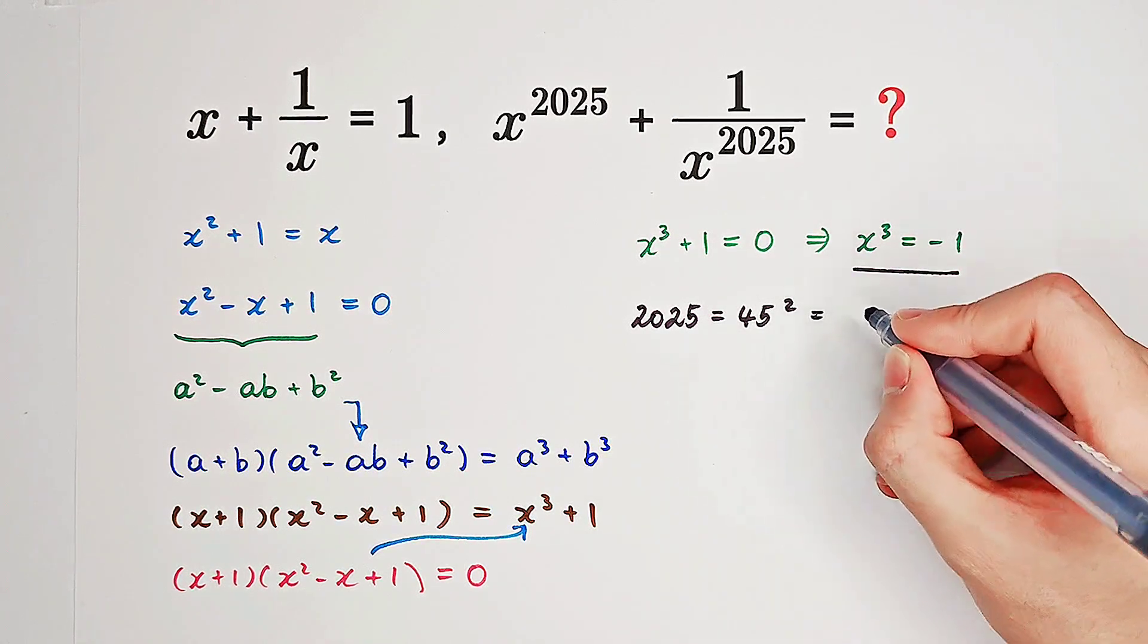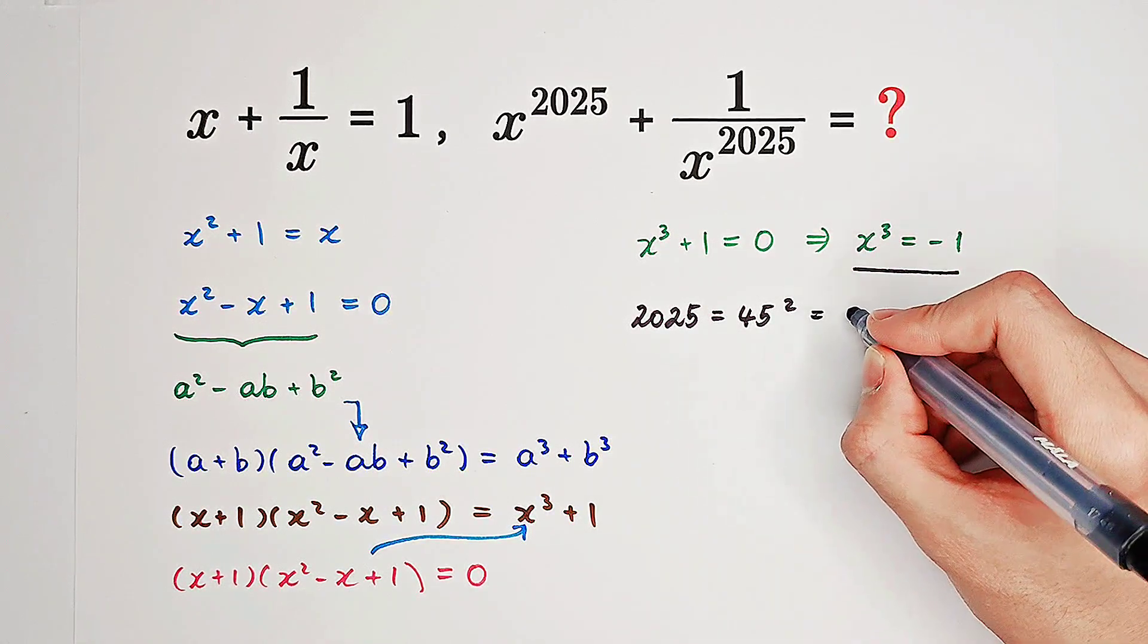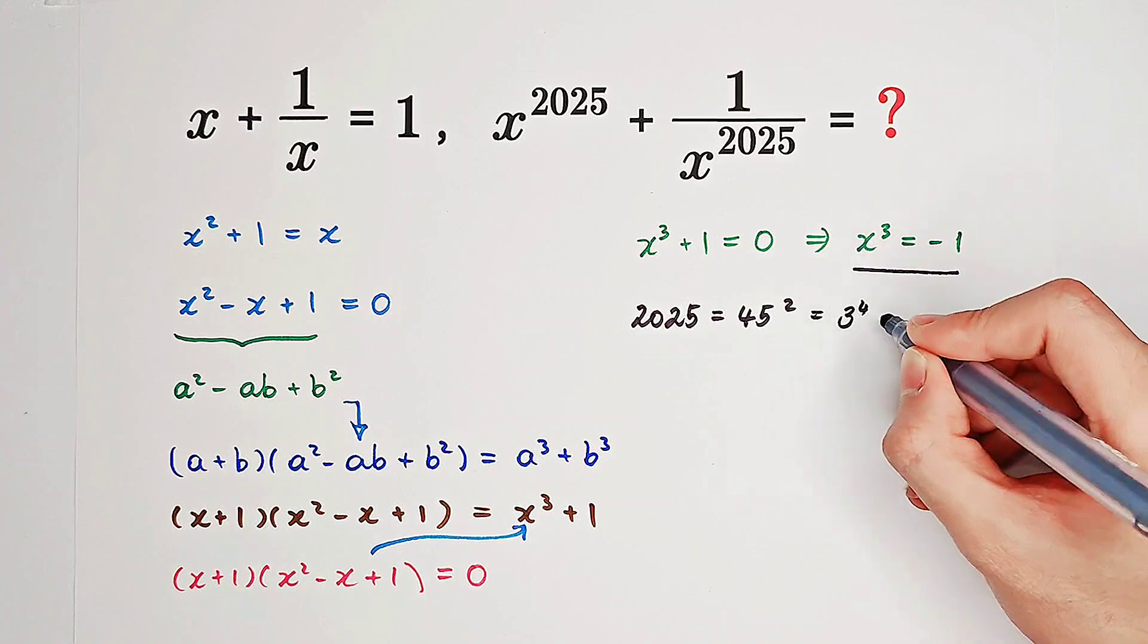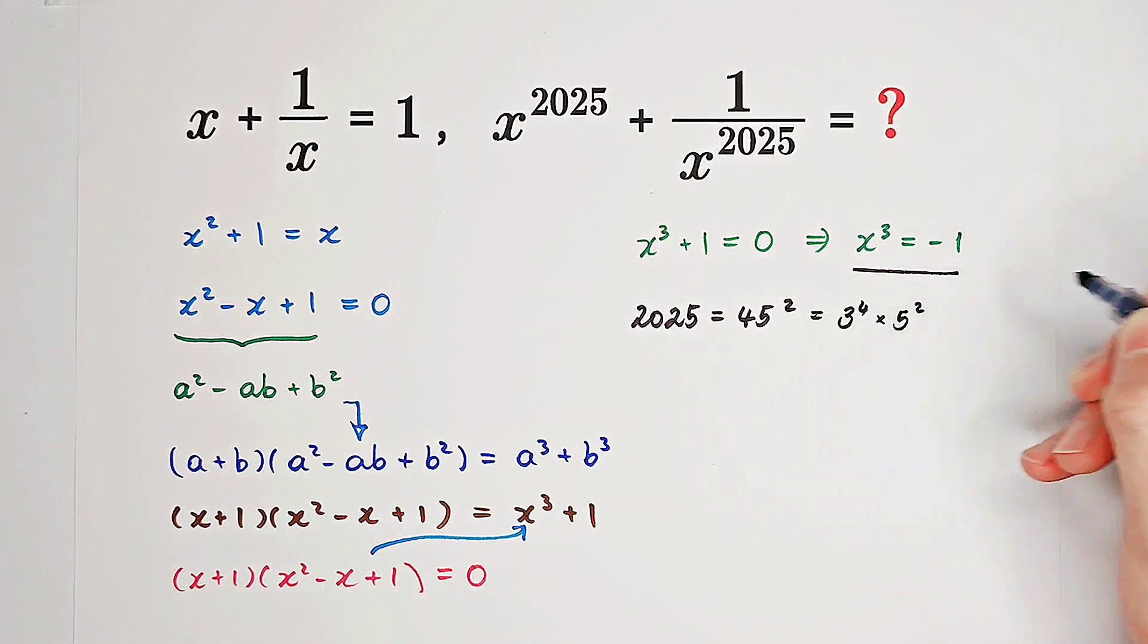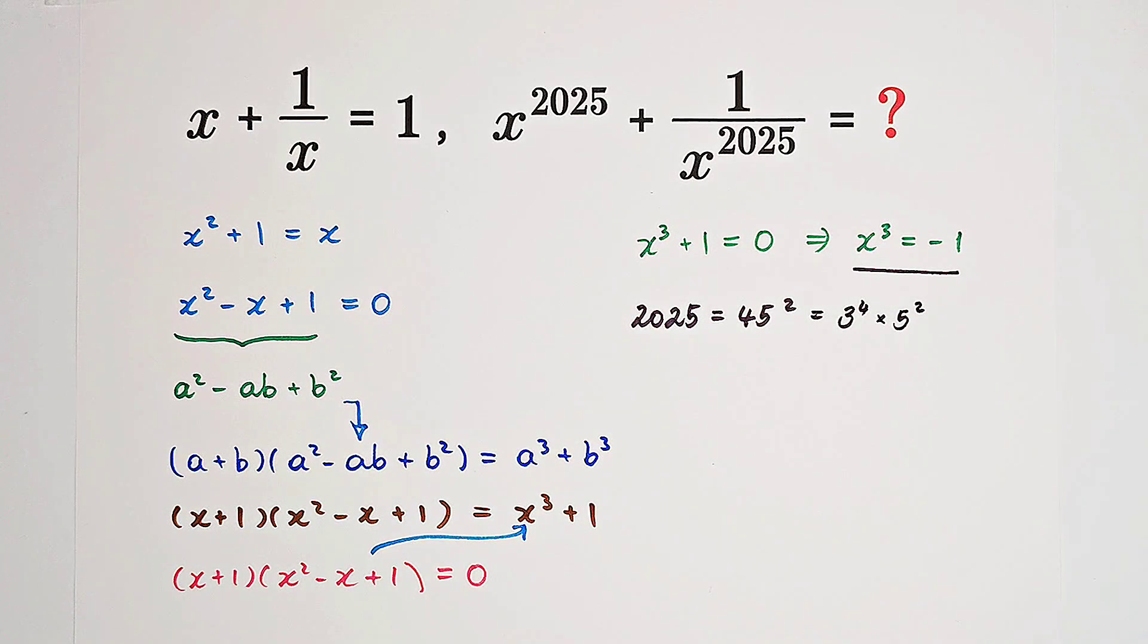45 is 9 times 5. 9 is 3 squared. So, it is 3 to the power of 4 times 5 squared. That's the factorization of 2025.